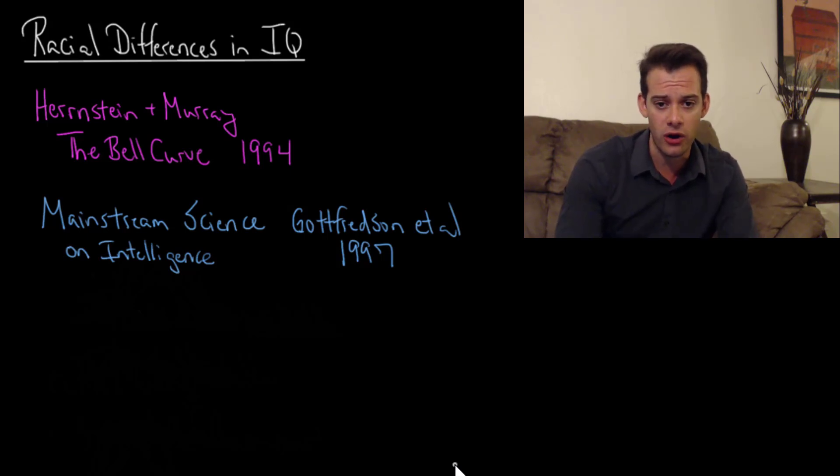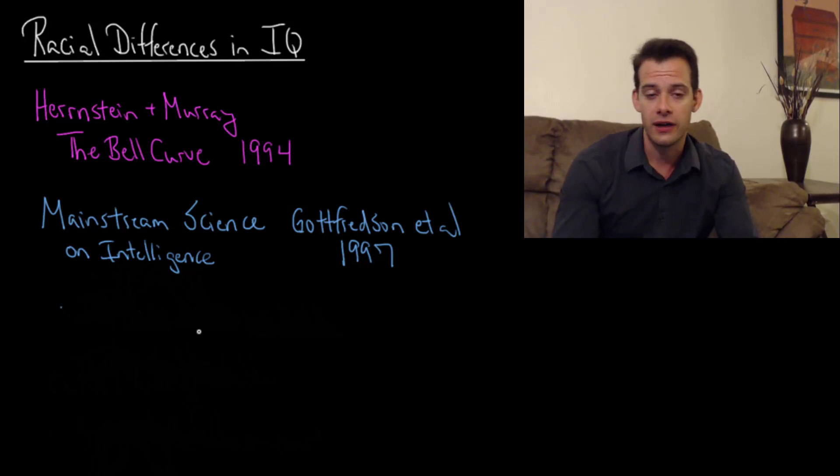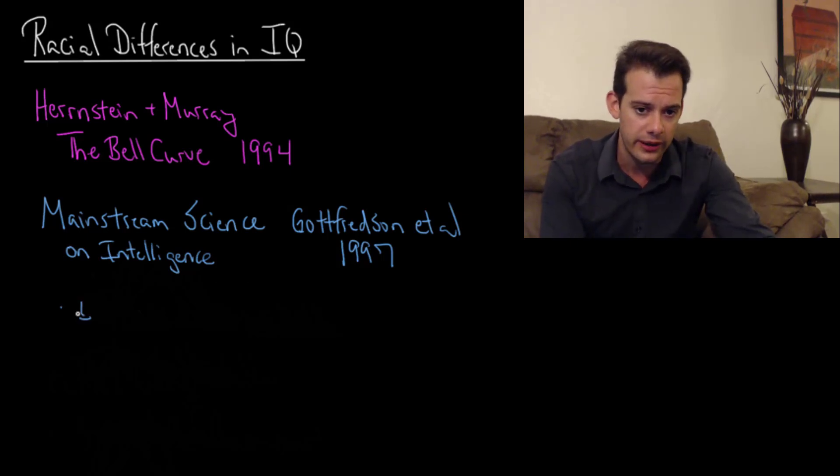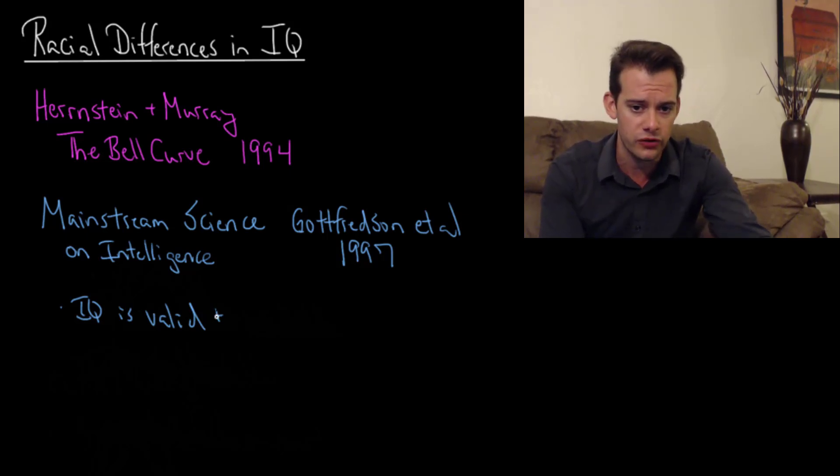In response to this controversy, a series of statements about intelligence was published in the Wall Street Journal and signed by dozens of intelligence researchers. This was called Mainstream Science on Intelligence and was later republished in the journal Intelligence with lead author Linda Godfrensen. This article made a few statements about IQ that these researchers all believed to be true. The first statement is that IQ is valid. It's a valid construct and it's reliable, one of the best assessments of a psychological trait we have.